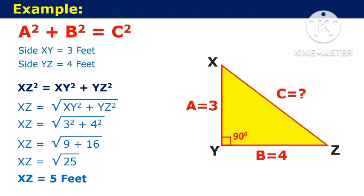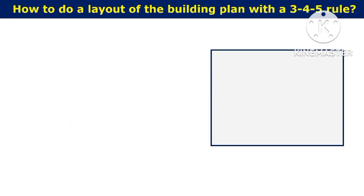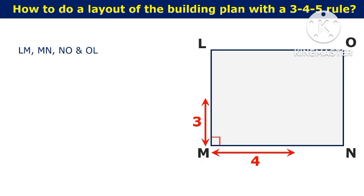Now let us observe how we can use this method to do a layout in construction work. How to do a layout of a building plan with the 3-4-5 rule? Let us consider a building with corners LMNO with four walls: LM, MN, NO, and OL. To make the junction point M of a wall at a right angle, let us measure and mark 3 feet on side LM and 4 feet on side MN.